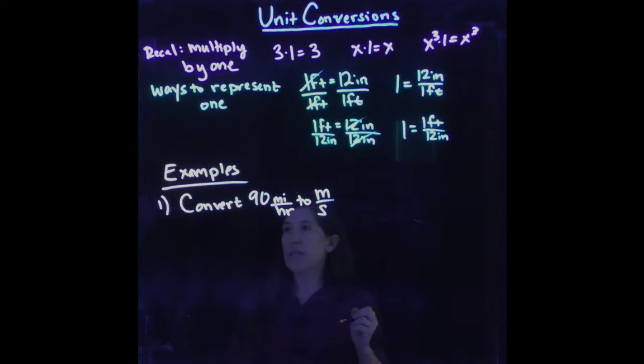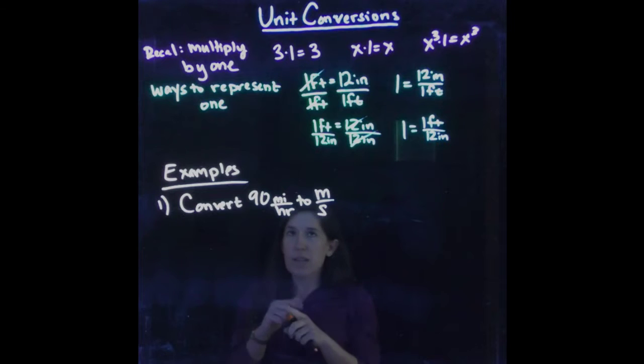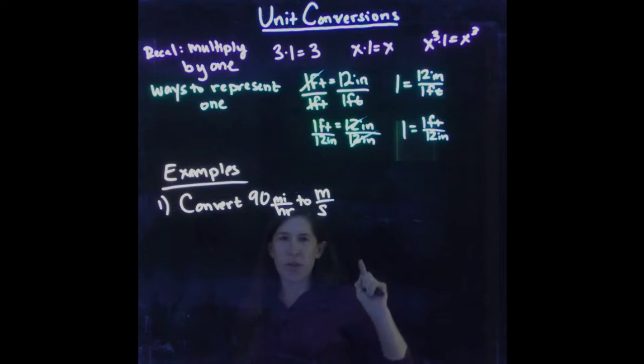And this is a good example because in your introductory level physics classes, you should always be working in SI units. So if you ever have a problem that gives you something in miles per hour, you should automatically think, let me convert that to meters per second. So let's do this really quickly.